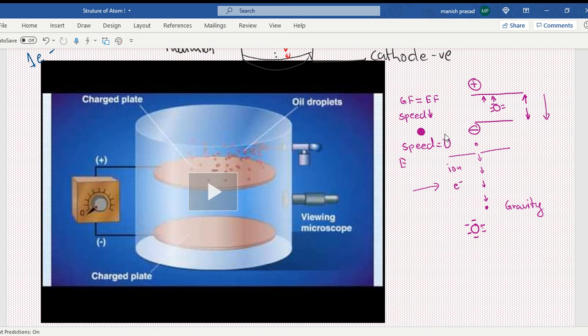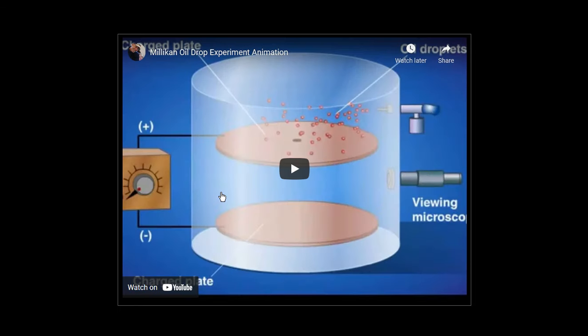And when the electrostatic force becomes greater than the gravitational force, you will see the oil droplet, instead of going down, it will start going upwards. In Millikan's oil drop model, he actually calculated how much charge the oil drop had.